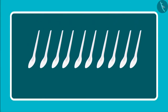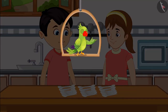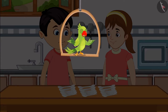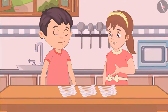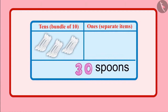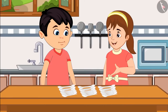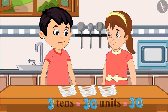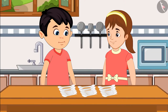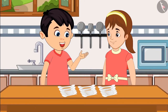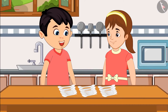Children, do you think that Chotu has bought 30 sets of 10 spoons? Come on, let's see. Chotu, these are just 30 spoons. 30 does not mean 30 tens, but 30 units. 30 tens would be too many spoons. Okay, now I have understood. You are right, Aarti. Come on, let's take spoons for the guests.